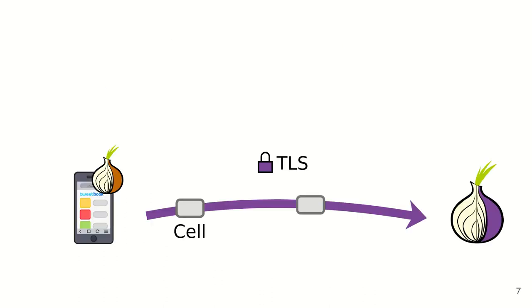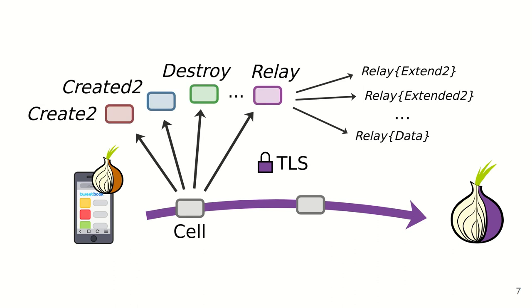Tor processes communicate by sending cells across TLS encrypted connections. There are different cell types for different purposes, such as building circuits, establishing connections, relaying data, and more. A relay needs to be able to handle most of these cell types, so relays do much more than just forward TCP data.